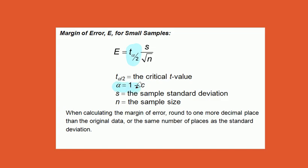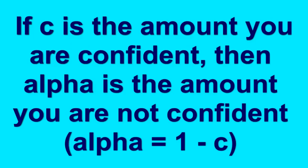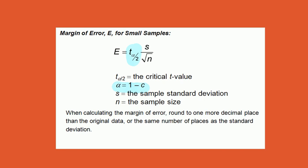Alpha is 1 minus C. Talking in more concrete terms for you, if I am 95% sure, then alpha would be 1 minus 95%, or 5%.